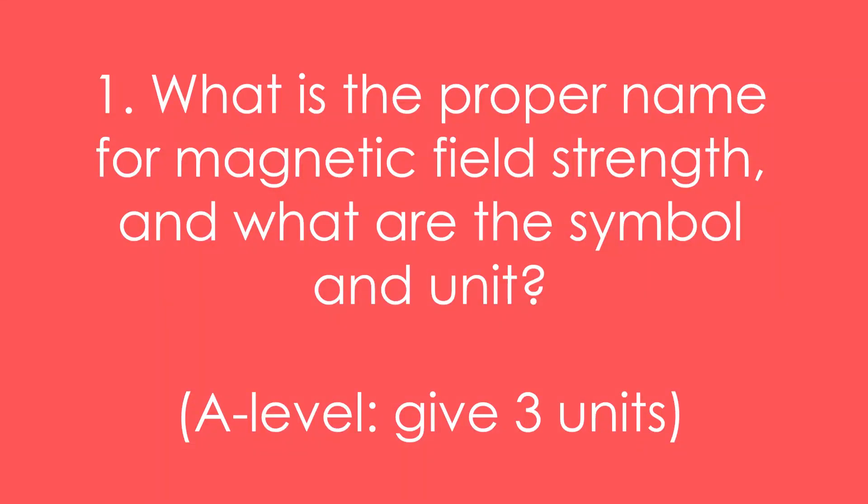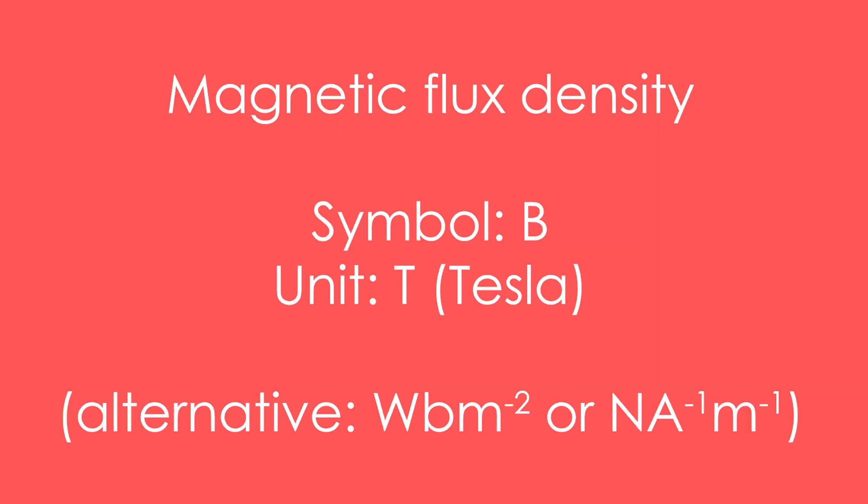Question 1: What is the proper name for magnetic field strength and what are the symbol and unit? It's magnetic flux density. The symbol is capital B, and the unit is capital T for Tesla.